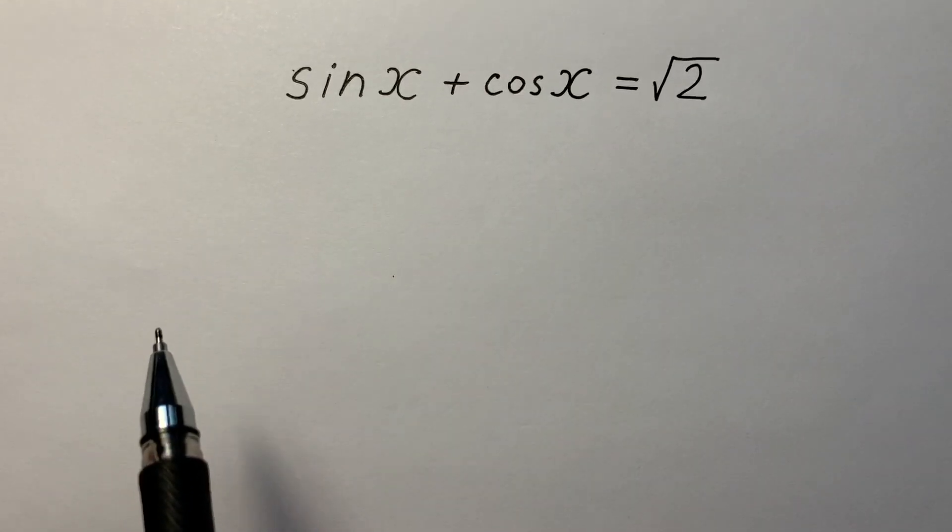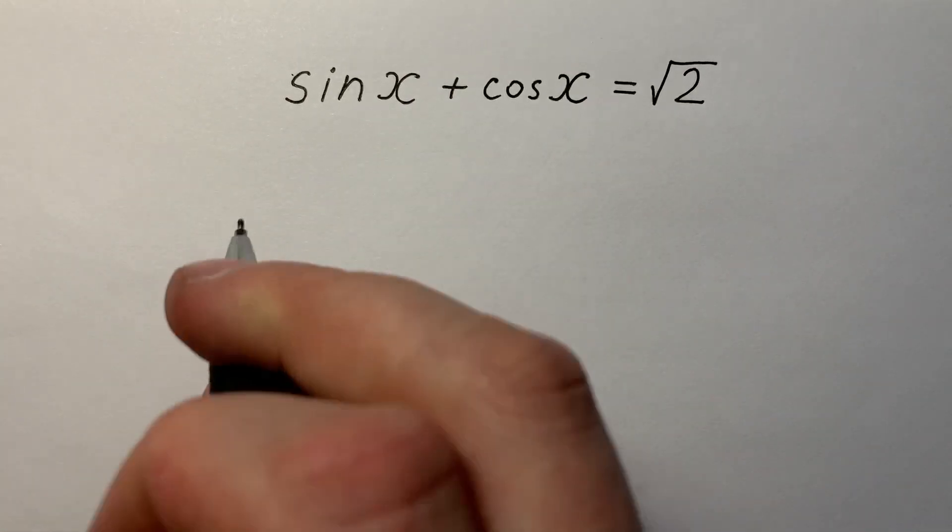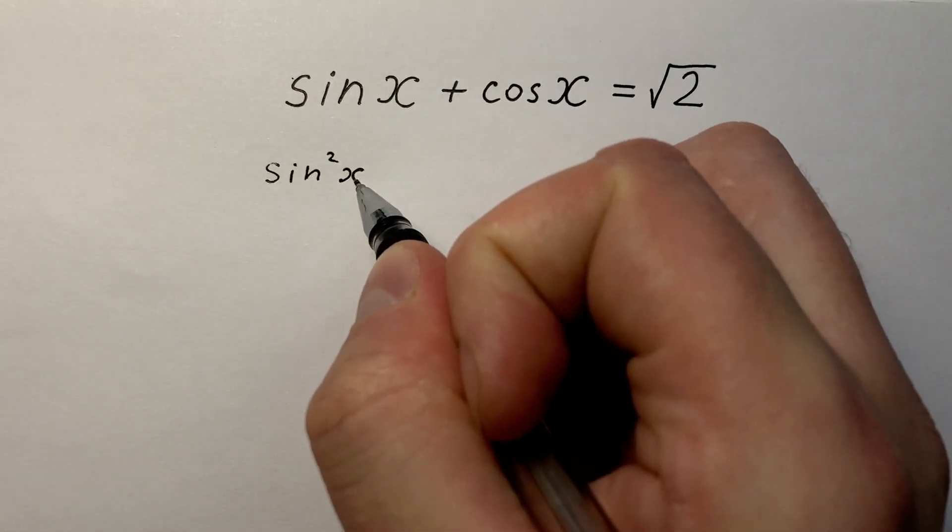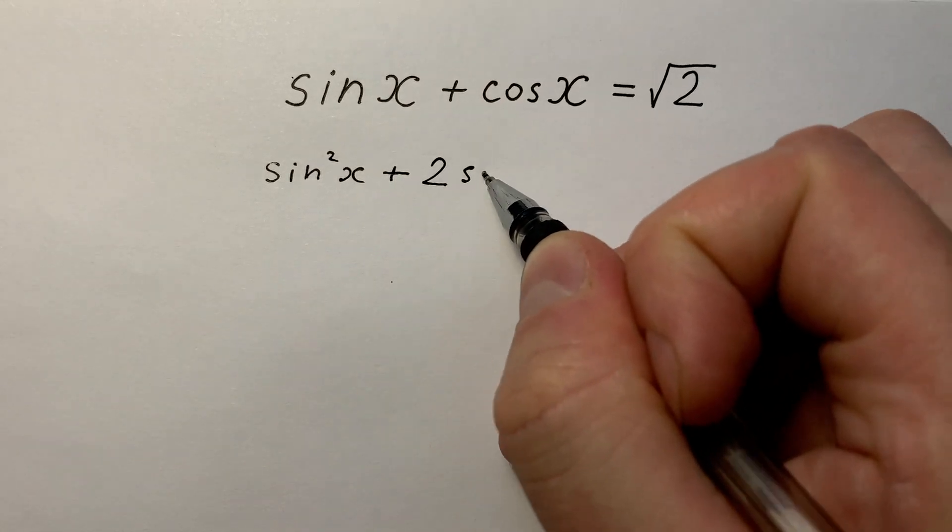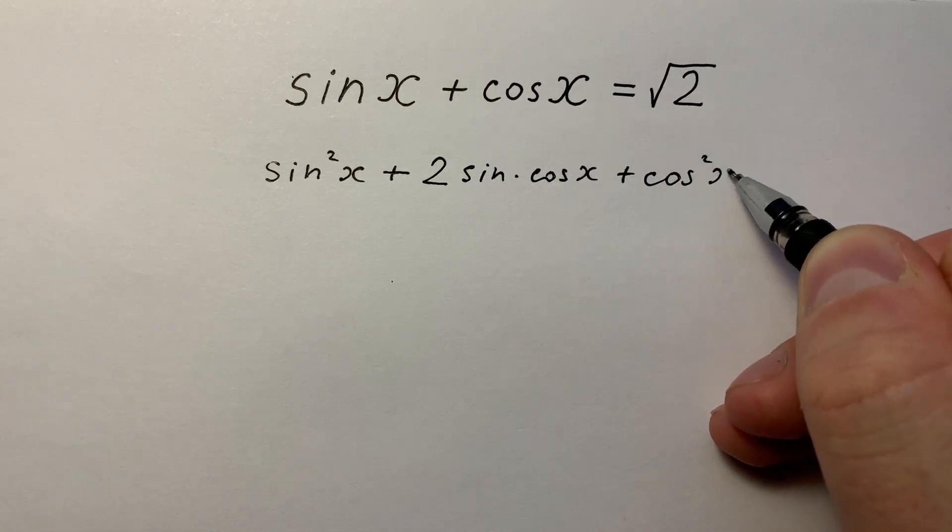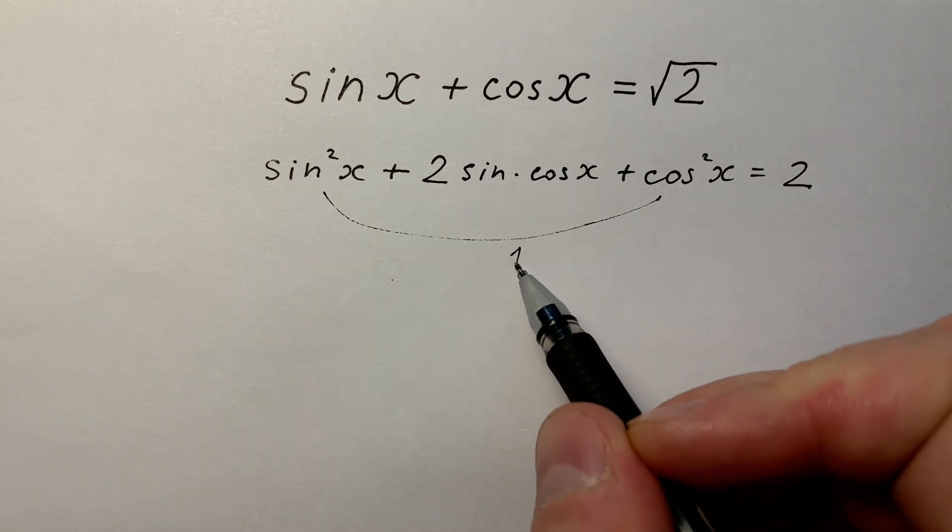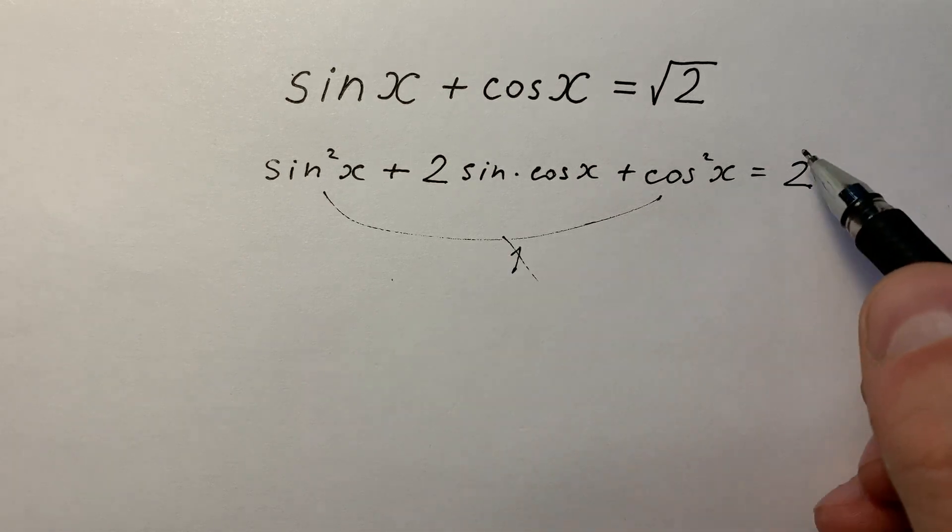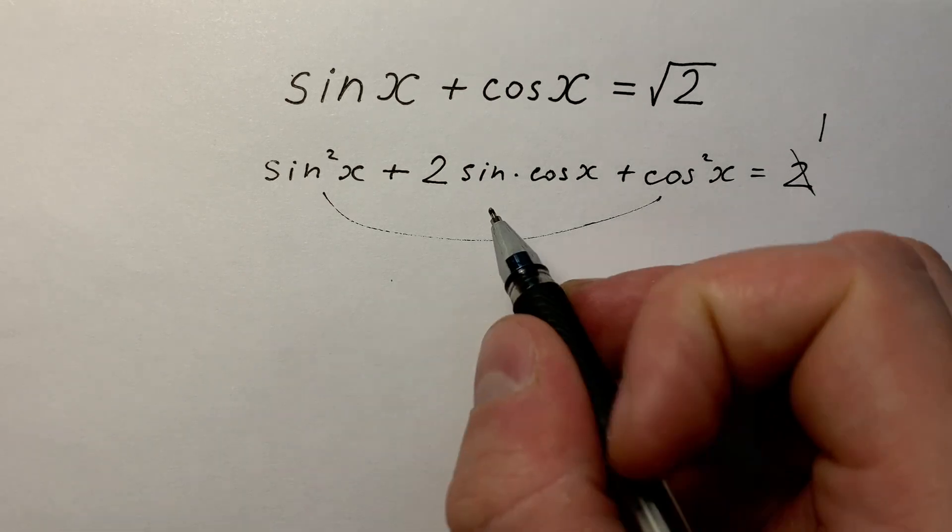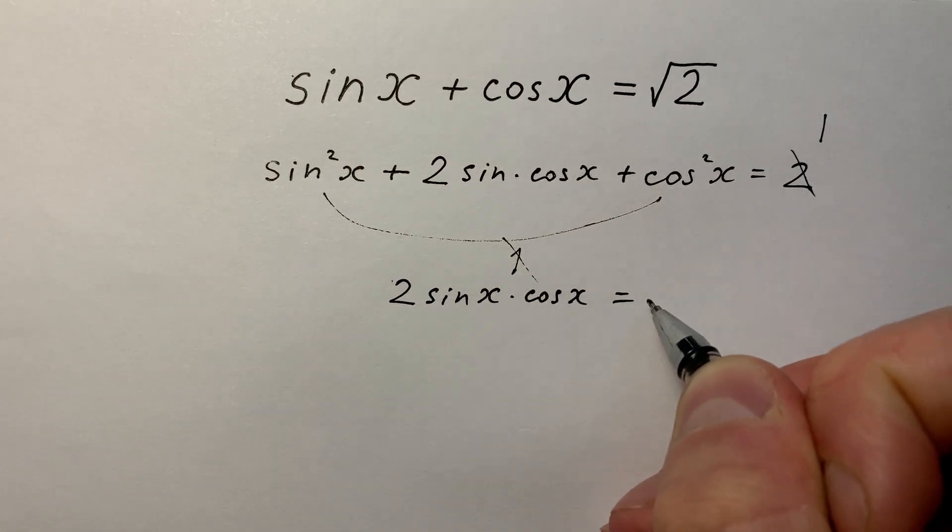There are about two ways how to solve this equation. The long way: you can square both sides of these equations. sin²x + 2sin(x)cos(x) + cos²x equals 2. sin²x + cos²x equals 1, and 1 + 2sin(x)cos(x) equals 2, so 2sin(x)cos(x) equals 1.